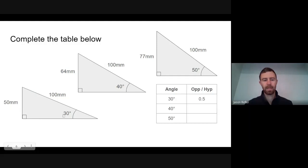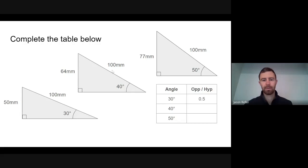Here's a 30-degree triangle: the opposite is half the length of the hypotenuse — 50 is half of 100 — so opposite divided by hypotenuse gives 0.5. Here's a 40-degree triangle; the shape is different because the angle is larger. Opposite divided by hypotenuse: 64 over 100 gives 0.64. For a 50-degree triangle, opposite divided by hypotenuse: 77 over 100 gives 0.77.